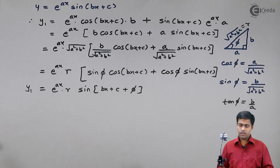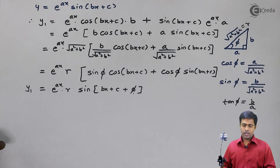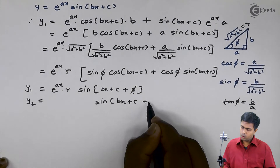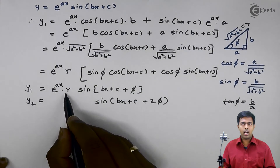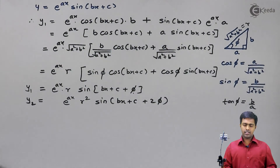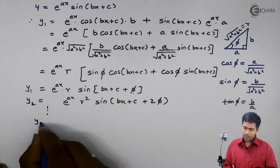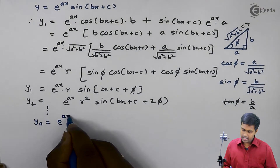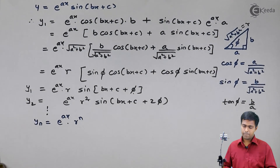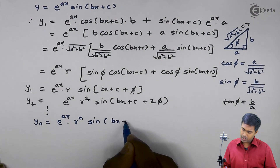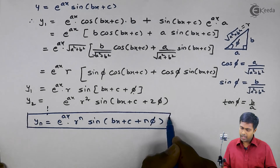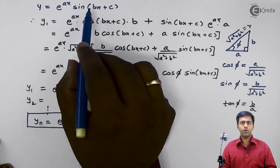So after finding y1, we got this extra phi in the argument. Now if I find y2 from this y1, then inside the bracket I will get the term 2 phi, and similarly I will get one more r outside the bracket — so this becomes r squared, and e raised to ax remains as it is. Hence, if I find yn from this, we get it as e raised to ax, r raised to n — because in y2 we get r squared and in y1 we get r — and inside the bracket we get sin(bx plus c plus n times phi). And this becomes the formula for the nth derivative of e raised to ax into sin(bx plus c).